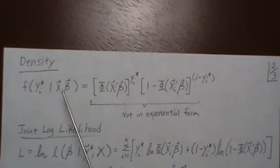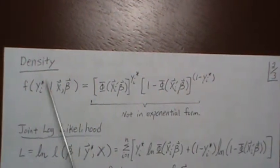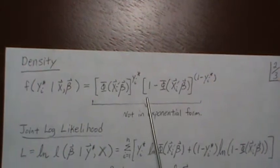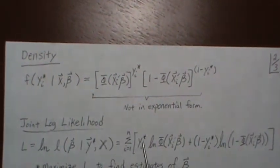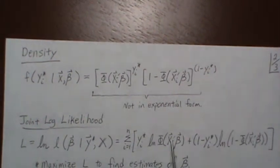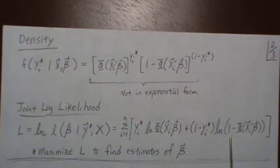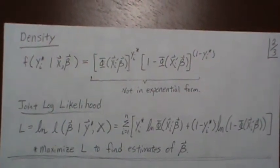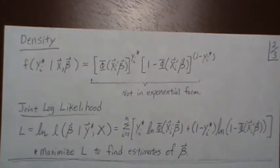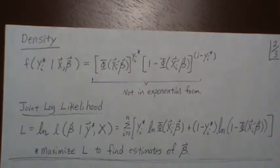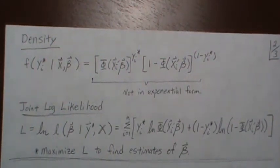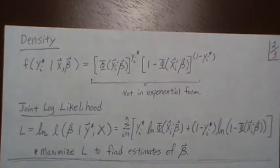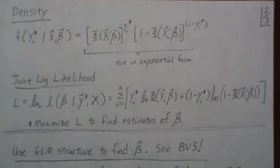The likelihood is this, but we switch the beta and the Y. The joint likelihood would be the product. The joint log likelihood is the log of that, and the log of products is the sum of the logs. We just maximize this joint log likelihood and estimate the beta. But we've developed a big machine to do this in the first five videos, so we're going to switch. Instead, we could transform that to the canonical exponential form and proceed using the GLM structure.